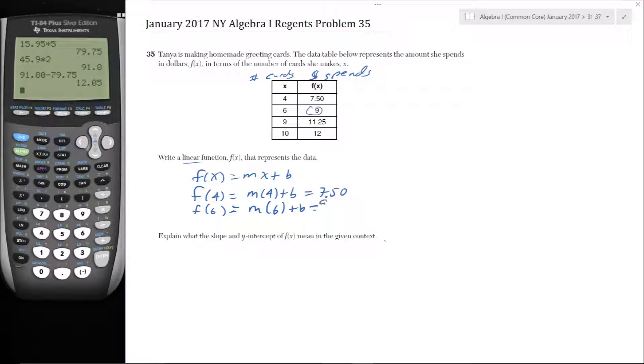Okay, so let's subtract. So subtract M times 4 plus B and subtract 7.5. And then I like doing the keep change change like my students love to do. So it changes to a plus of a negative number. And then we get 6M minus 4M is 2M. B plus negative B cancels. 9 minus 7.50 is 1.50, and divide by 2. And we get M is equal to 0.75.